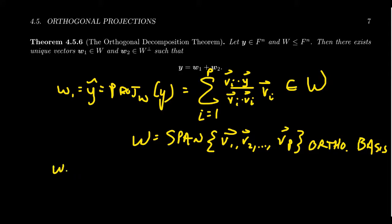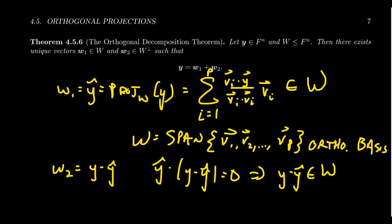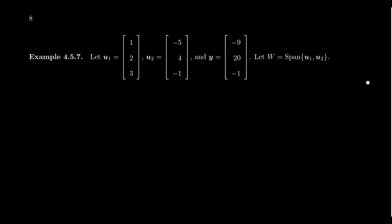How do you get w2? Well, w2 is just going to be y minus y hat, for which you can then show that y hat dot (y minus y hat) is always equal to zero. So these things will always be perpendicular to each other, which then implies that y minus y hat belongs to W perp. Clearly, the way we've defined this, if w1 is y hat and w2 is y minus y hat, their sum will equal y. So that's what the orthogonal decomposition theorem is all about: we can decompose a vector using orthogonal projections.